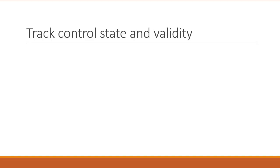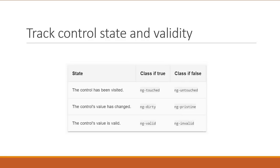Form validation and providing appropriate visual feedback is very important. Over the next couple of videos, let's take a look at validation in template-driven forms. Let's begin by understanding how Angular helps us with form validation by tracking the state of the form controls and applying the appropriate classes. Here is a snapshot from the Angular docs which clearly shows what class is applied to a form control based on its state and validity.